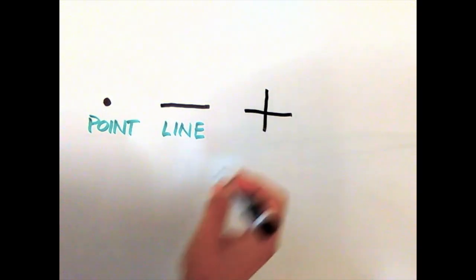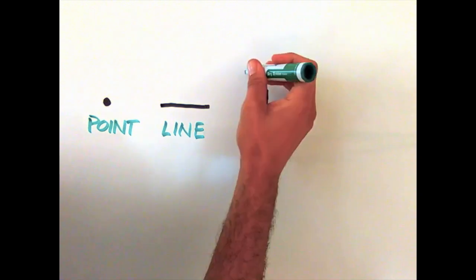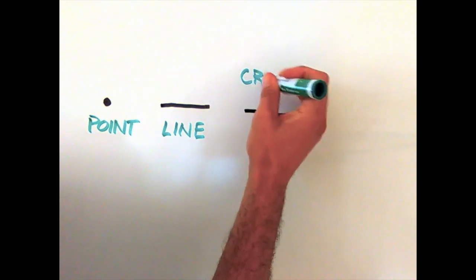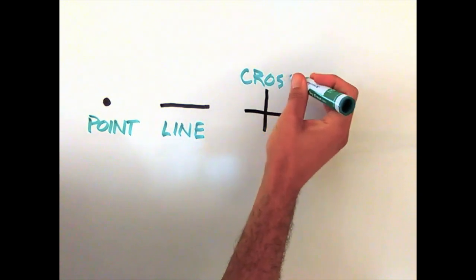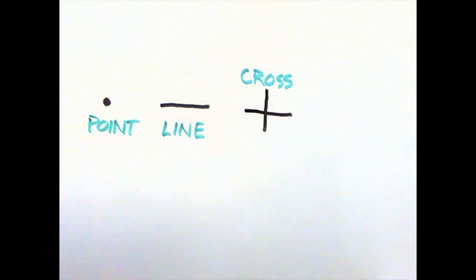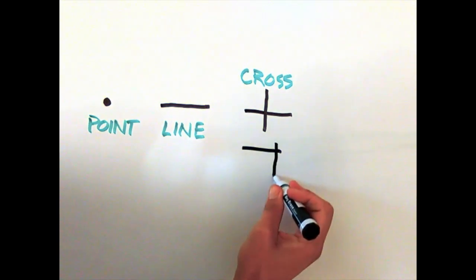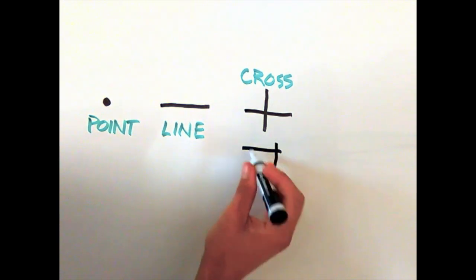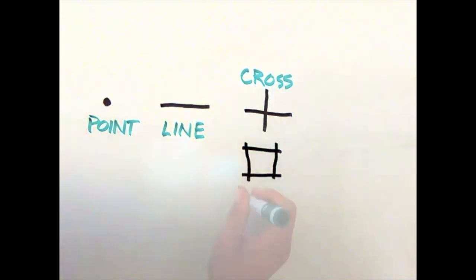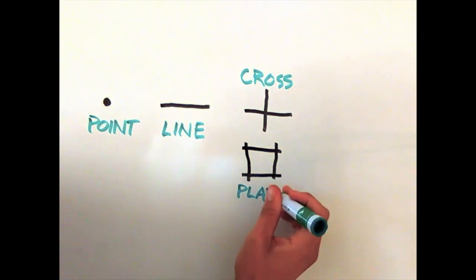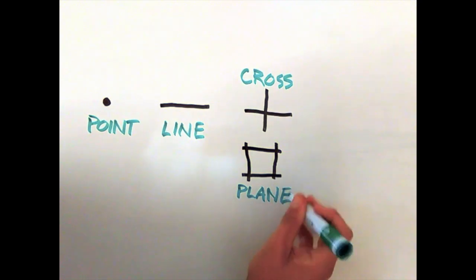Cross and plane. A line that comes into contact with another line forms a two-dimensional cross. Intersecting lines that enclose space create a plane.